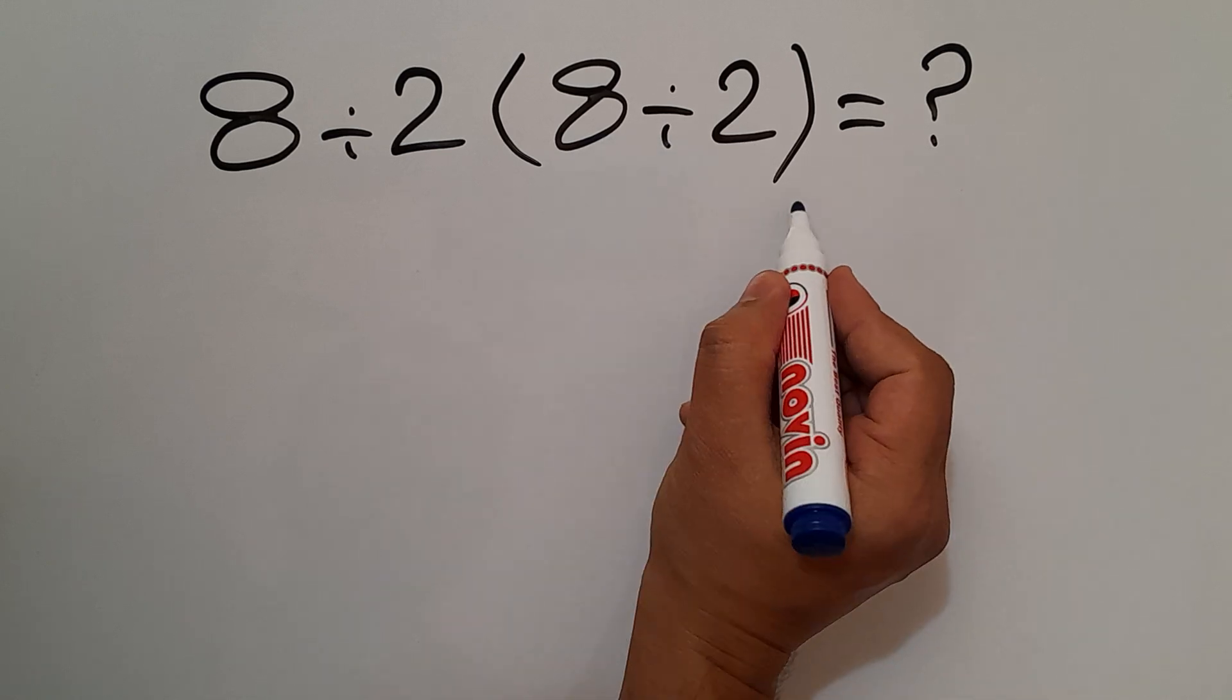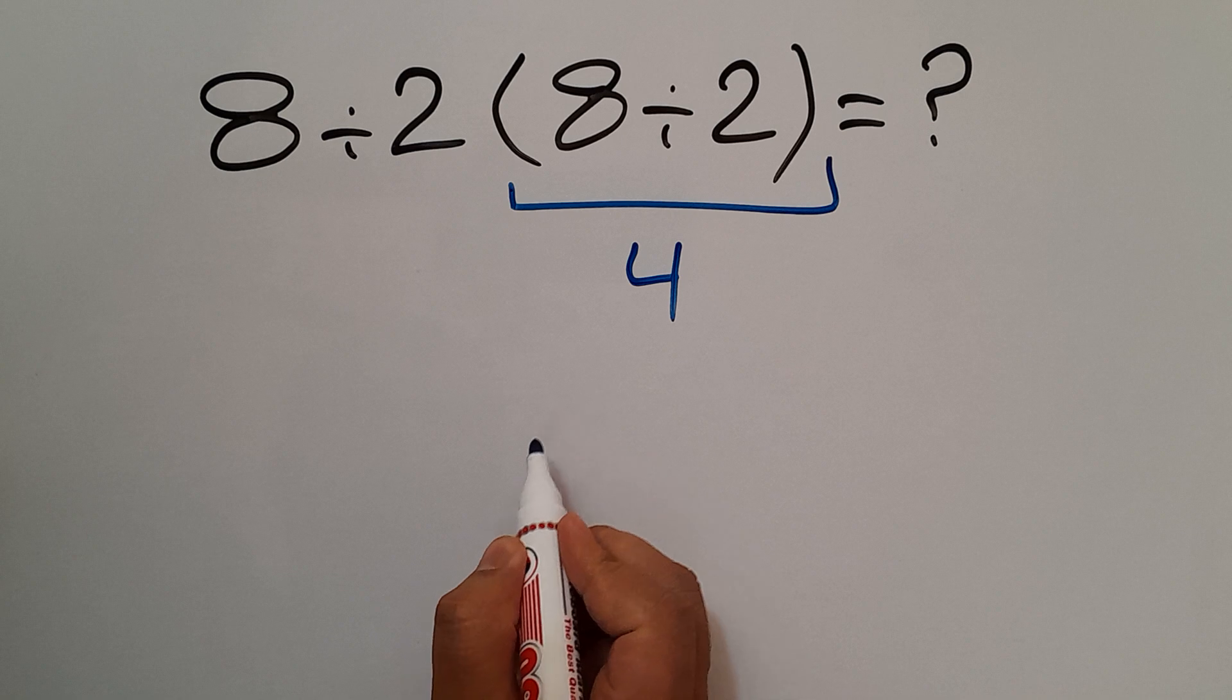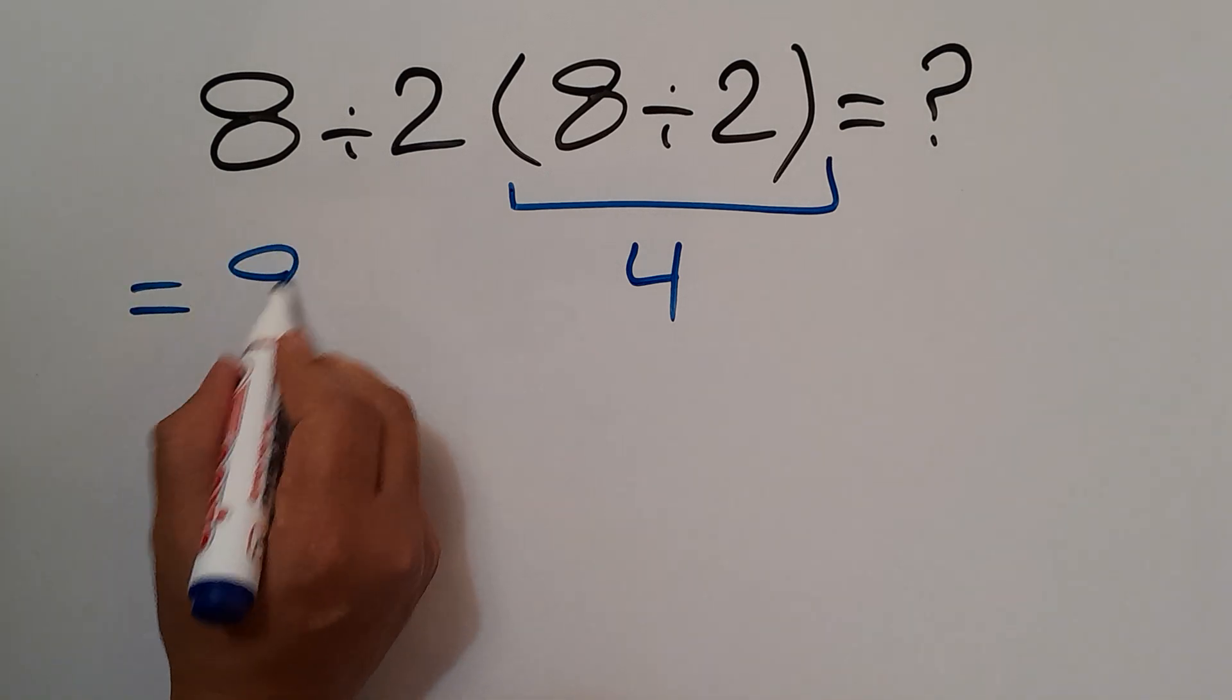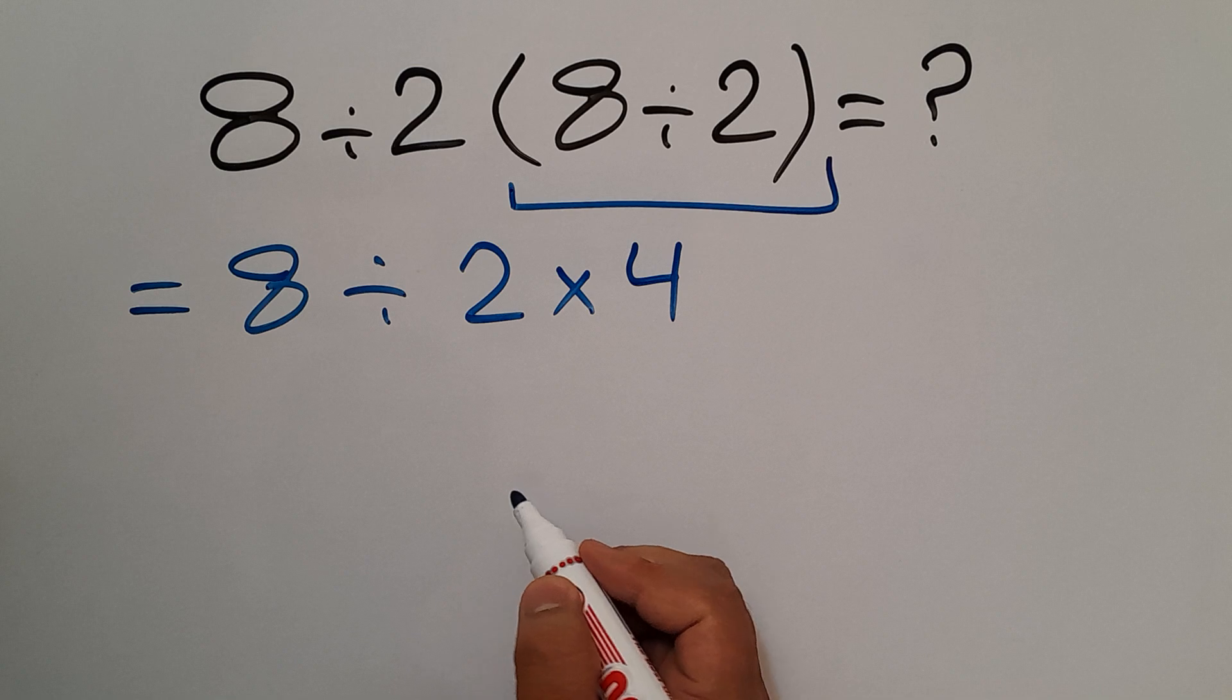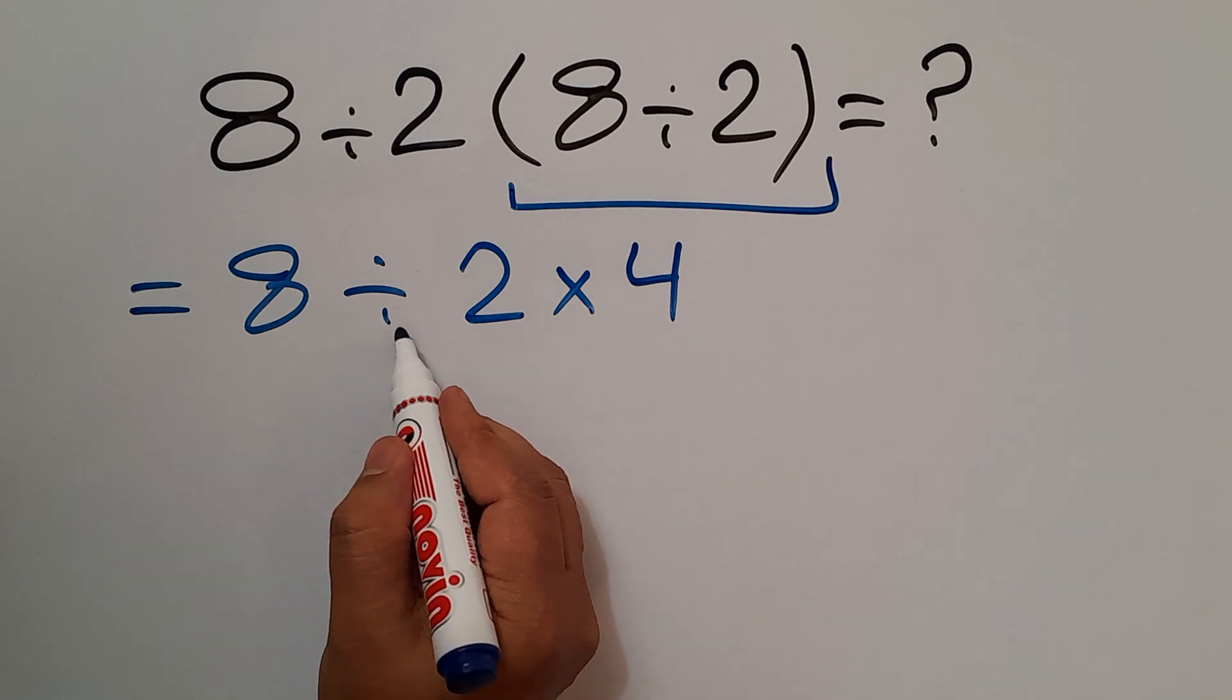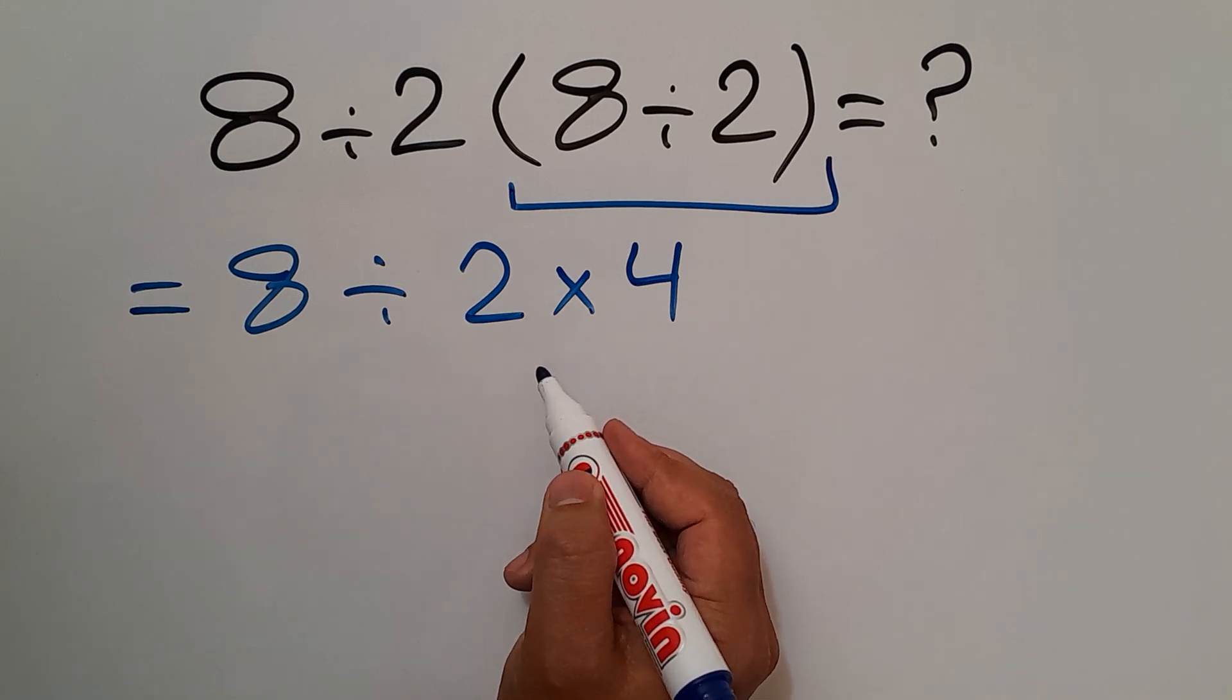8 divided by 2 equals 4, so we have 8 divided by 2 times 4. Now we have one division and one multiplication.